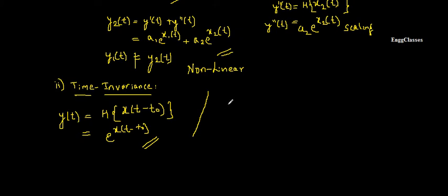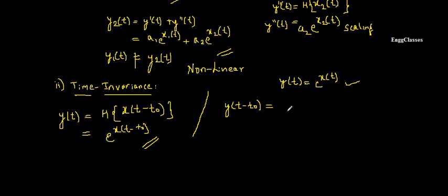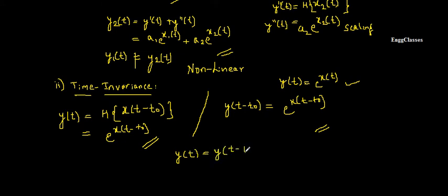In the second half, I consider a shift in the output. Starting from y(t) = e^x(t), I get y(t − t₀) by replacing every t with t − t₀, giving e^(x(t − t₀)). Comparing both results, the two expressions are equal. Hence the system is time invariant — the output does not vary with time.